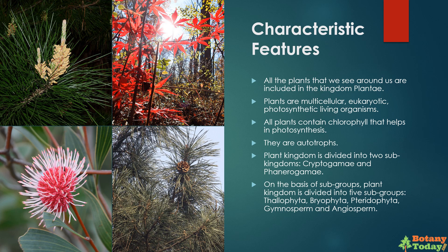Plant kingdom is broadly divided into two sub-kingdoms: cryptogami and phanerogami. On the basis of sub-groups, plant kingdom is divided into five sub-groups: thallophyta, bryophyta, pteridophyta, gymnosperm, and angiosperm. Thallophyta, bryophyta, and pteridophyta are included in cryptogames, while gymnosperms and angiosperms are included in phanerogames.